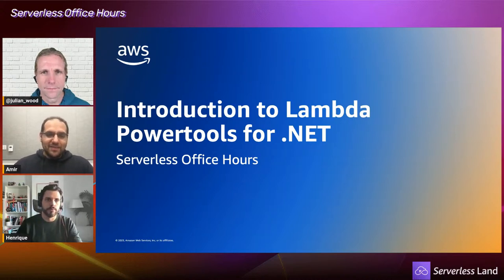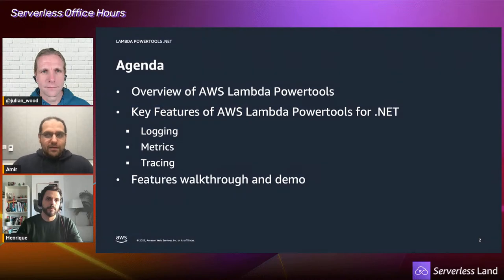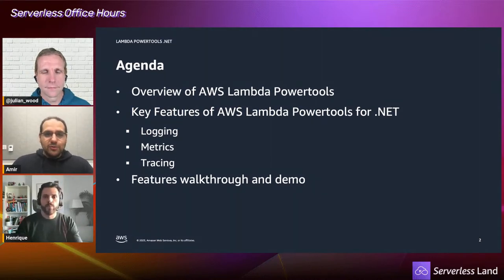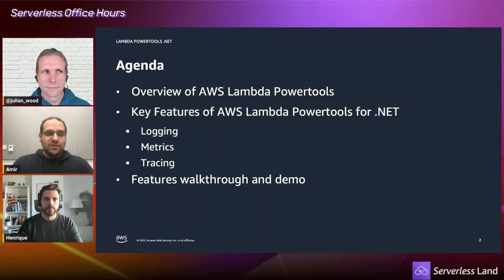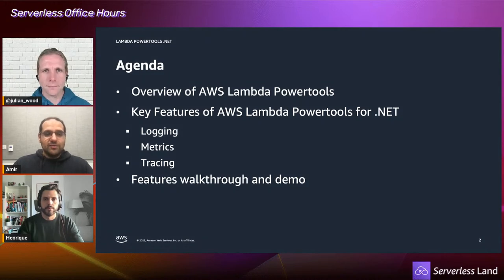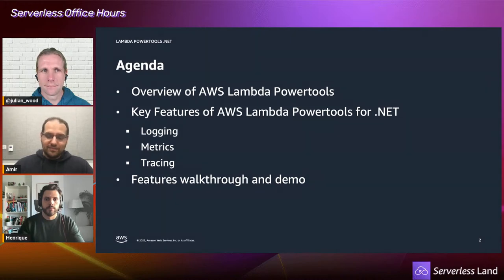Today we're going to talk about Lambda Power Tools for .NET. Looking at the agenda: I'll give an overview of AWS Lambda Power Tools as a whole, a bit of background, how we can use it and how it's helpful. Then I'll focus on some of the key features for .NET specifically — core utilities like logging, tracing, and metrics. Then I'll hand it over to Enrique to do some cool demos and show you how to get hands-on with the code.